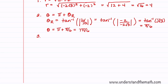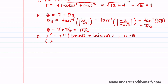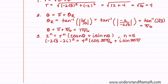Our third step is to apply our formula: z to the n equals r to the n times cosine of n theta plus i sine of n theta, where n equals 5. This gives us negative 2 root 3 minus 2i raised to the 5th equals 4 to the 5th times cosine of 5 times 7 pi over 6, which is 35 pi over 6, plus i sine of 35 pi over 6.